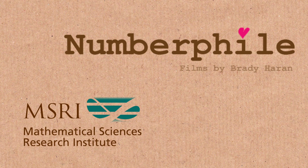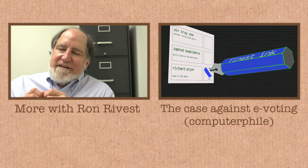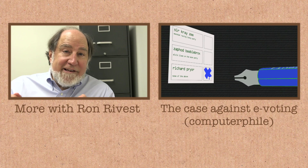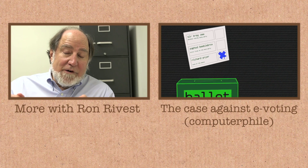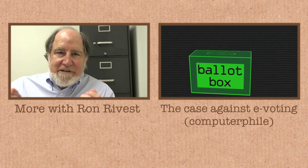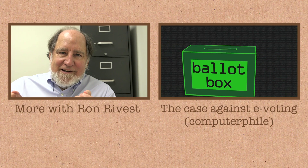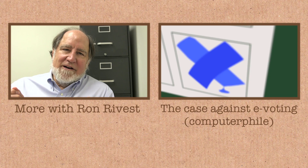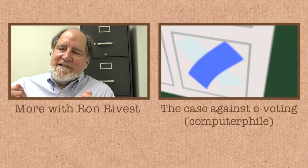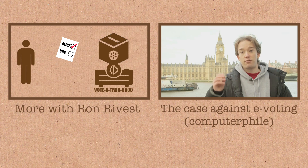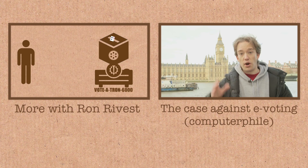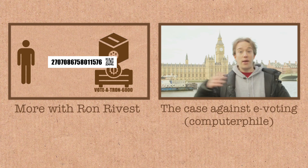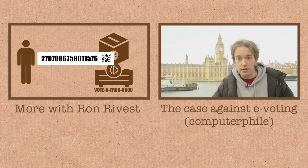A receipt when you vote — and the receipt is not the plain text of how you voted, but an encryption of how you voted. So it's something that you can't sell down at the bar because it's not interpretable by somebody else. It's a number or a barcode or something like that.